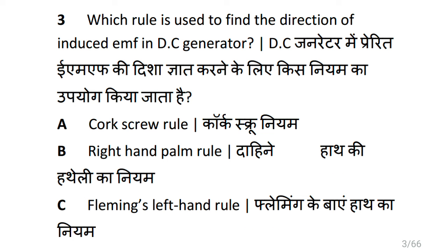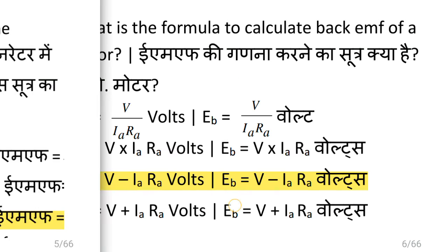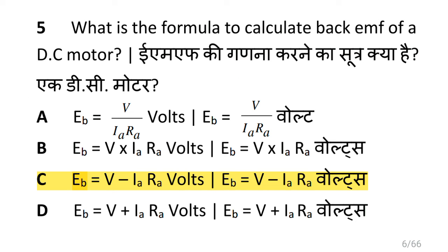Which rule is used to find the direction of induced EMF in DC generator? That is Fleming's right-hand rule. Which formula is used to calculate the generated EMF in DC generator? Generated EMF is equal to ΦZNS divided by 60 multiplied by P by A. What is the formula to calculate back EMF of a DC motor? That is EB is equal to voltage minus IA Ra, where IA is armature current and Ra is armature resistance.